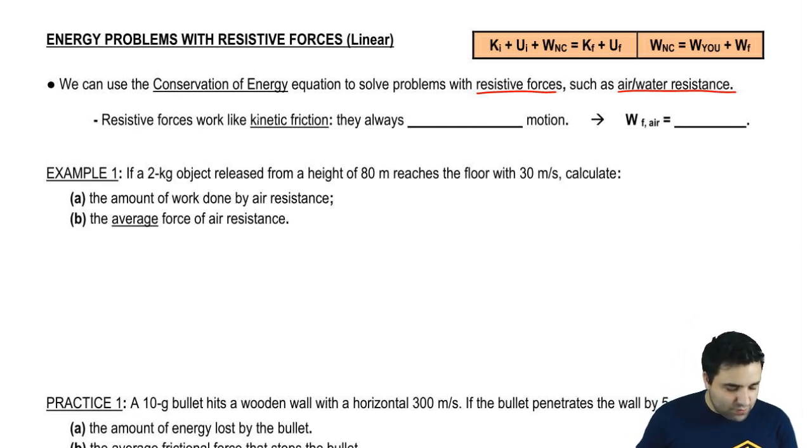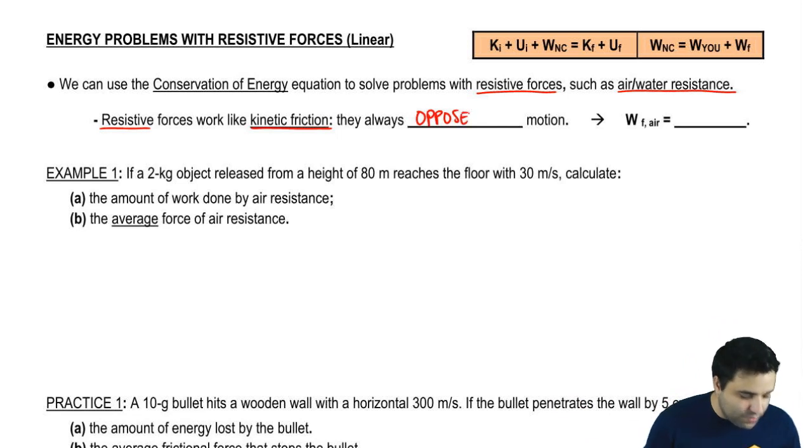Resistive forces work just like kinetic friction. If you have a box sliding to the right, kinetic friction is pulling the object to the left. So these resistive forces, it's in the name, they resist motion, so they will always oppose motion. Their direction will be opposite to the direction of your speed or velocity.